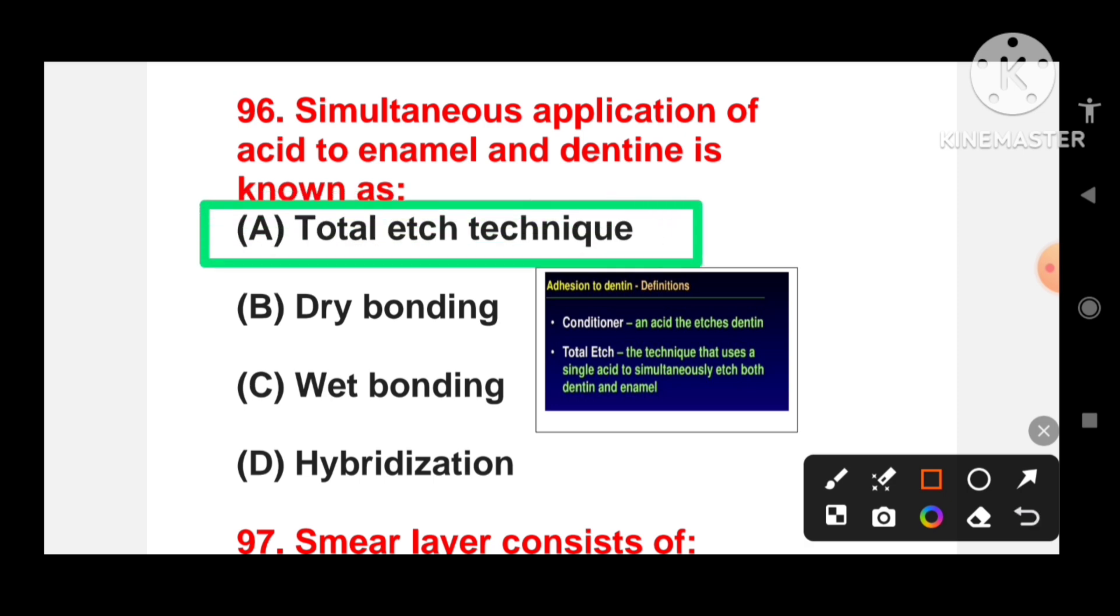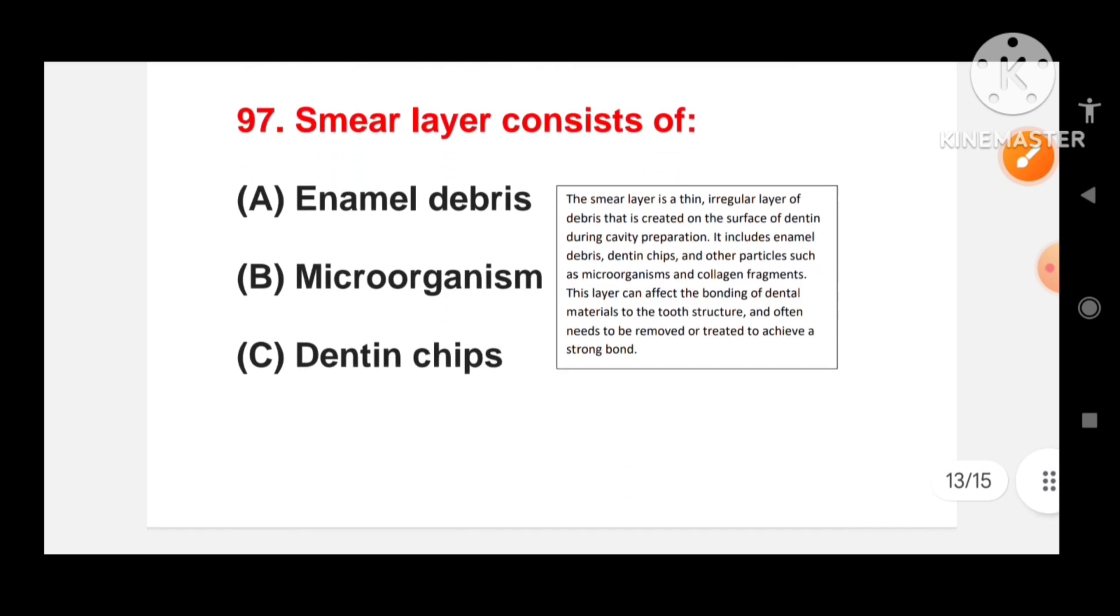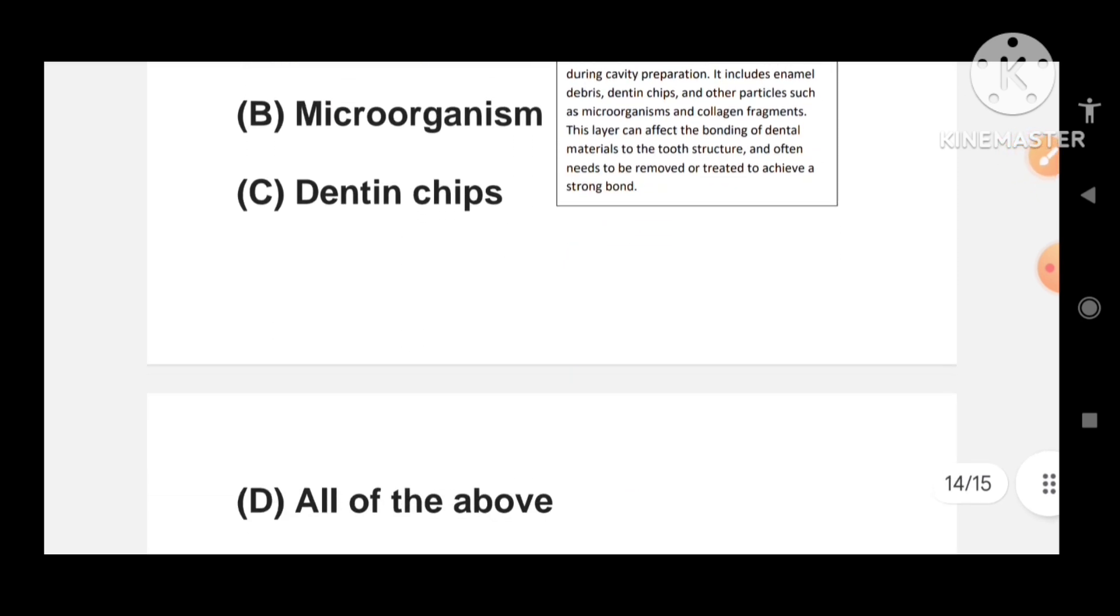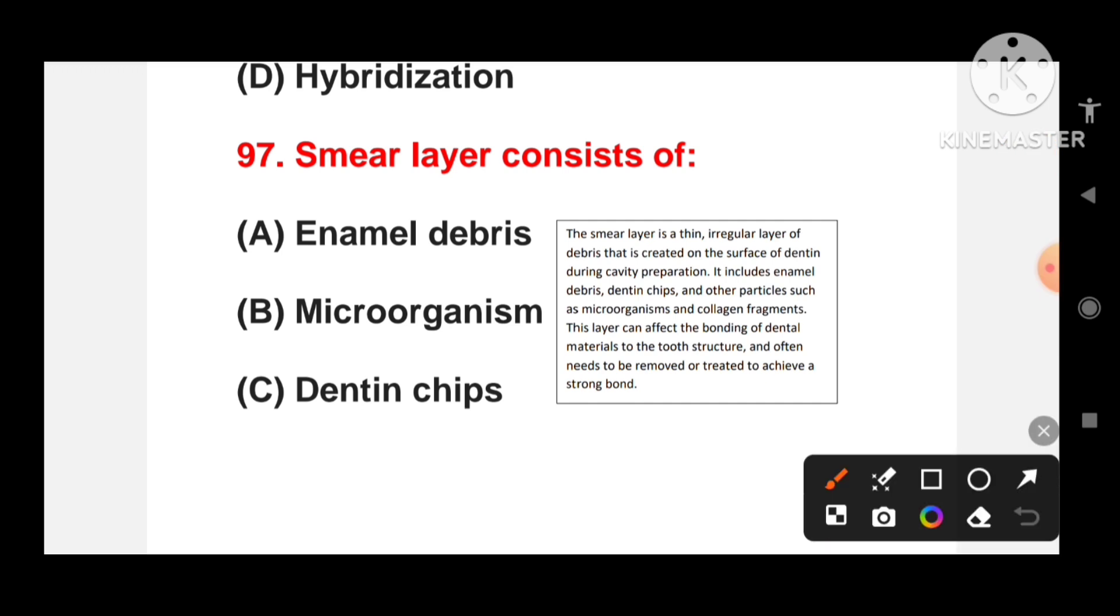Simultaneous application of acid to enamel and dentin is called total etch technique. In total etch, the technique uses a single acid to simultaneously etch both dentin and enamel. Smear layer consists of enamel debris, microorganisms, dentin chips or all of the above? The correct answer is all of the above.